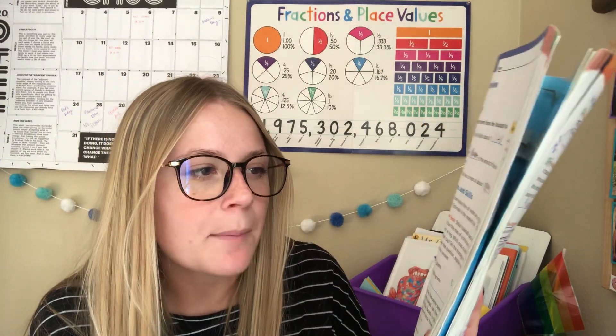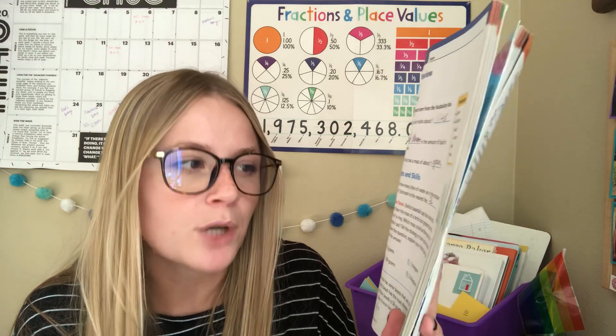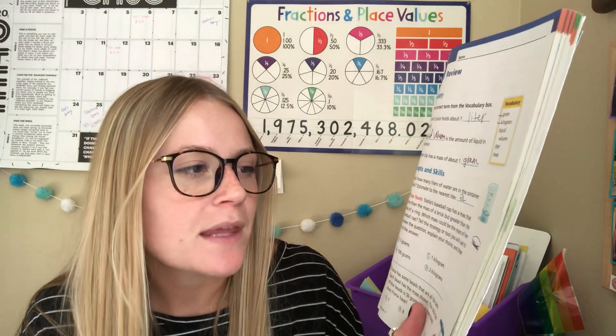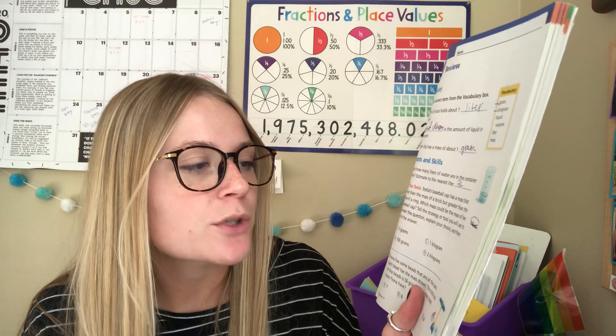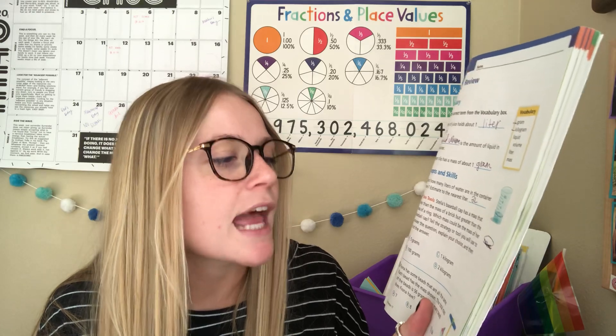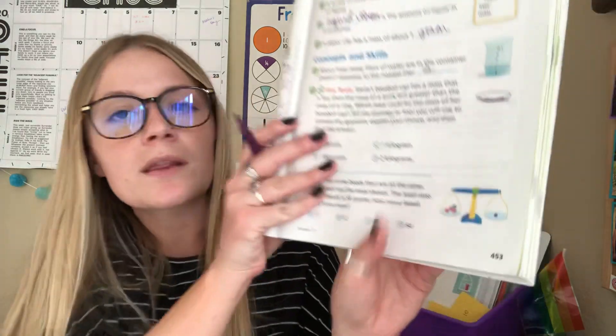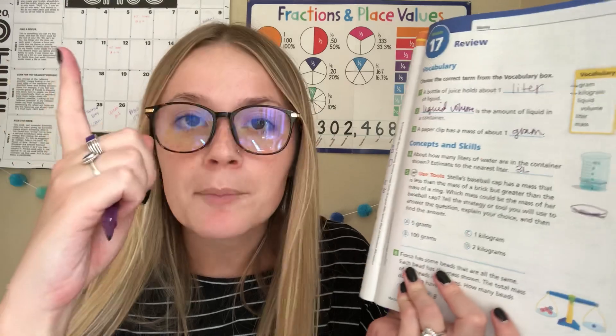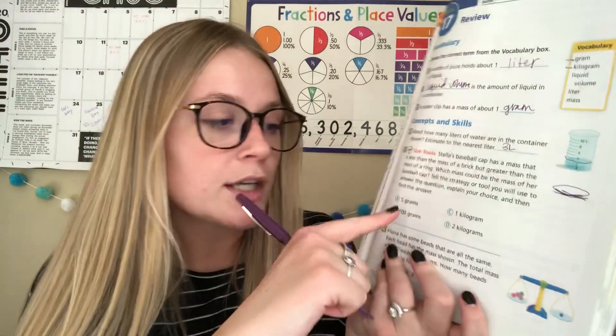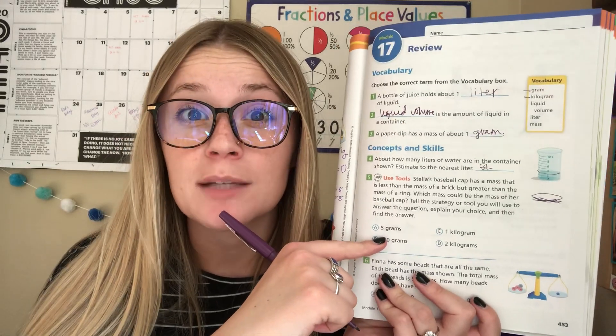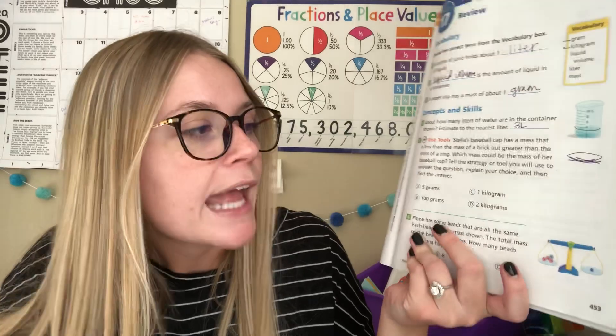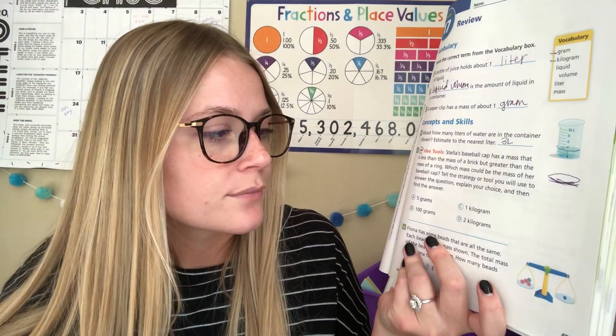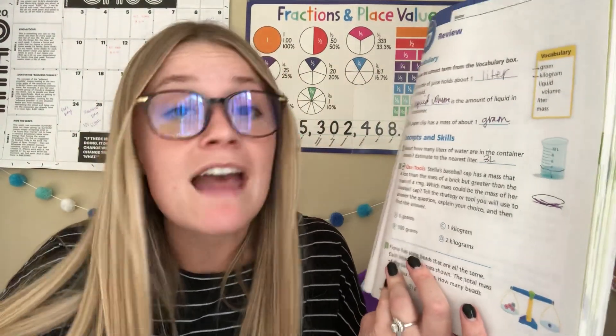Number five, Stella's baseball cap has a mass that is less than the mass of a brick, but greater than the mass of a ring. Which mass could be the mass of her baseball cap? Tell the strategy or tool you will use to answer the question, explain your choice, and then find the answer. So if we look at our options, five grams. If we're thinking about our benchmarks, a paper clip and a textbook, a paper clip is one gram. So think of five paper clips to make five grams. That is not a lot of weight. So I'm going to hold on to that, but I don't think it's likely that her baseball cap is that light. I feel like it's going to be a bit heavier than five paper clips.